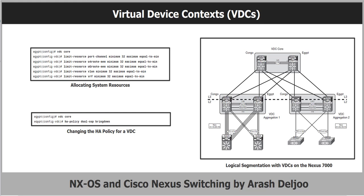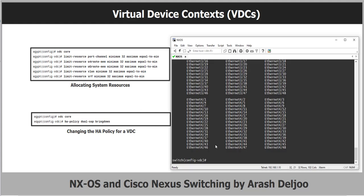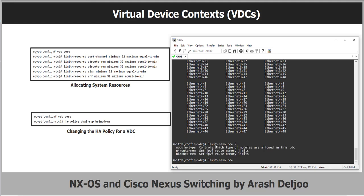Configuring these resource limits prevents a single VDC from monopolizing system resources. Inside the VDC context, you can use the 'limit-resource' command. Depending on the NX-OS version, options include module type, unicast IPv4 route memory, unicast IPv6 route memory, port channel limits, VLAN options, and VRF options. Additionally, defining the VDC HA, or high availability, policy is done within the VDC configuration submode using the 'ha-policy' command.